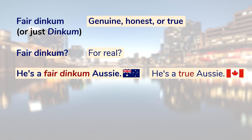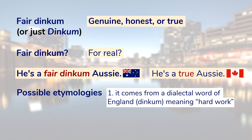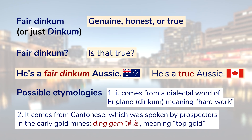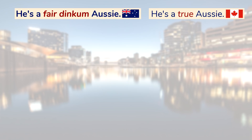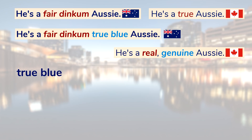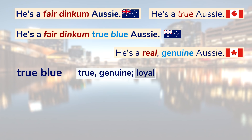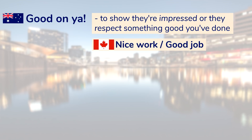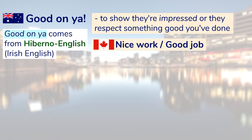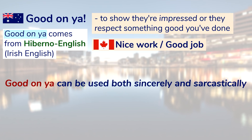I've come across a couple of possible etymologies for 'fair dinkum.' One states it comes from a dialectal English word meaning hard work; another states it comes from Cantonese spoken by prospectors in early gold mines — 'dingam' meaning real gold — though I think the first etymology is correct. 'He's a fair dinkum, true blue Aussie, mate.' 'True blue' is similar to 'fair dinkum,' meaning true and genuine, but also carries the meaning of loyal. And to all people with that trait, I say: 'Good on ya!' — what Aussies say when impressed or respecting something you've done. It comes from Hiberno English, that is, Irish English, and can be used both sincerely and sarcastically.